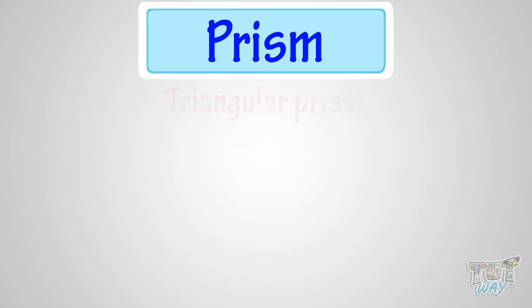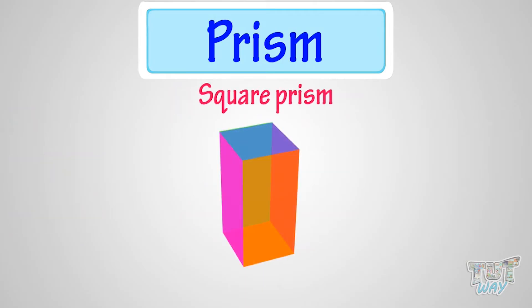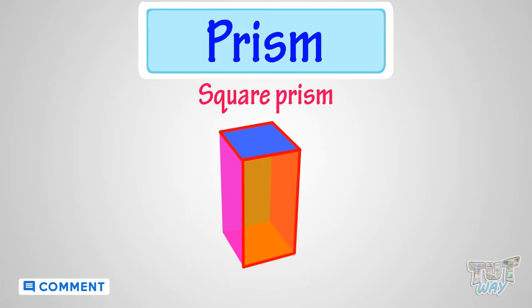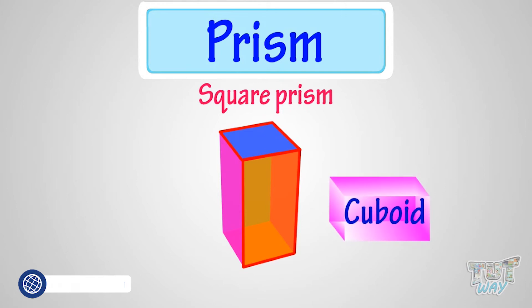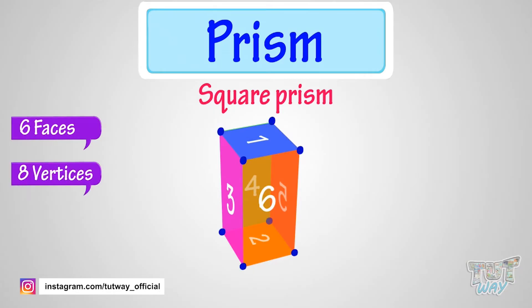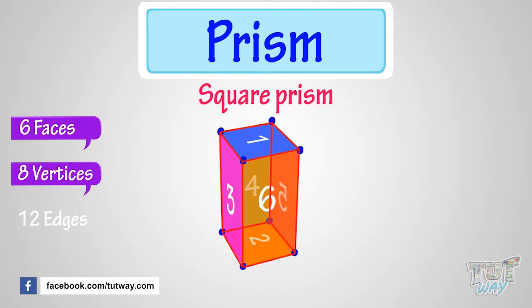This is a square prism, because its top and bottom faces are square in shape, and all other faces are rectangular. This is the same as a cuboid, so it has 6 faces, 8 vertices, and 12 edges.